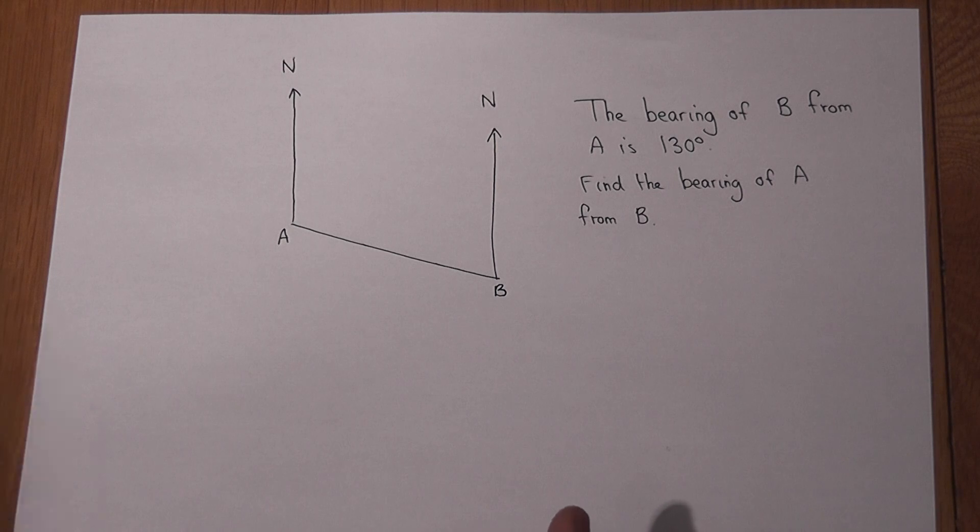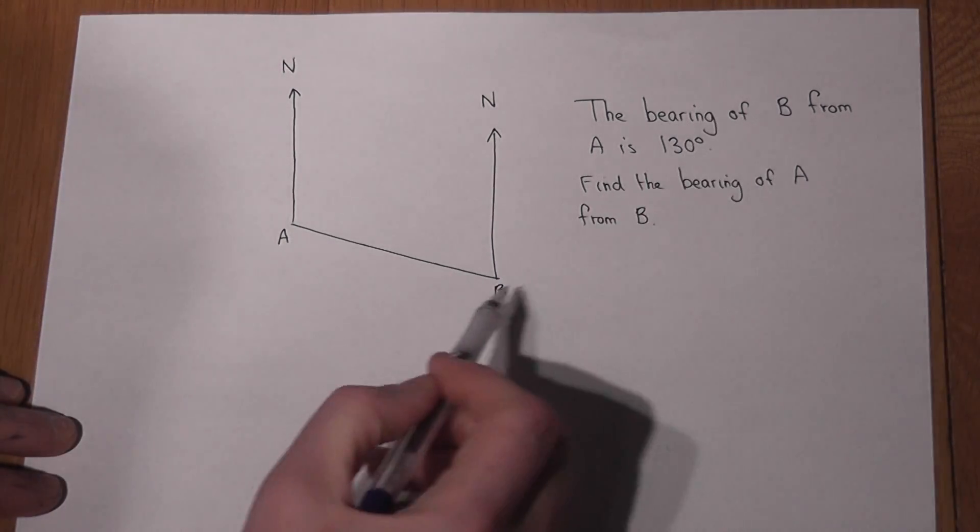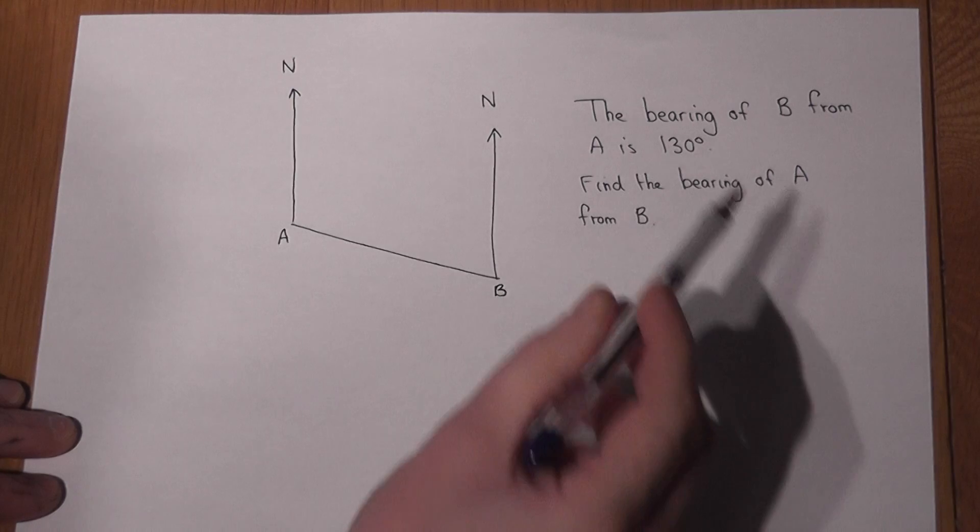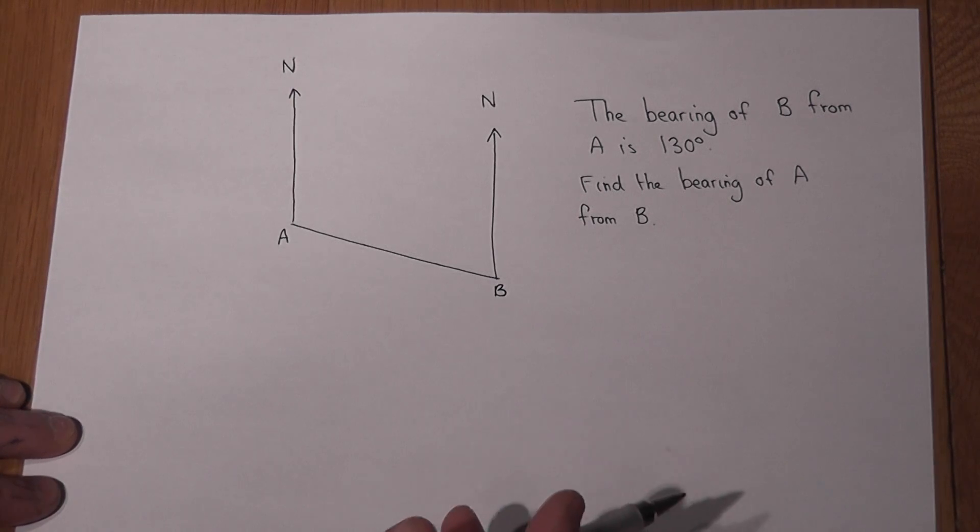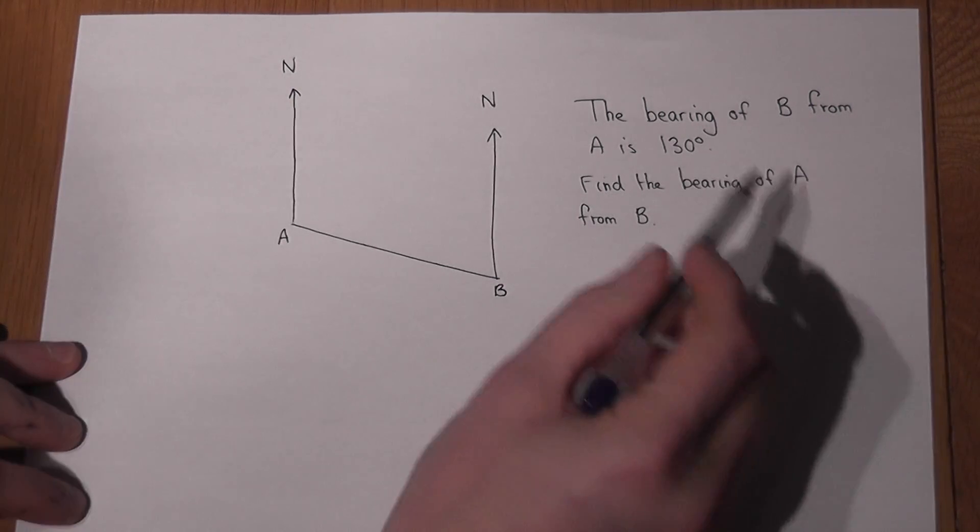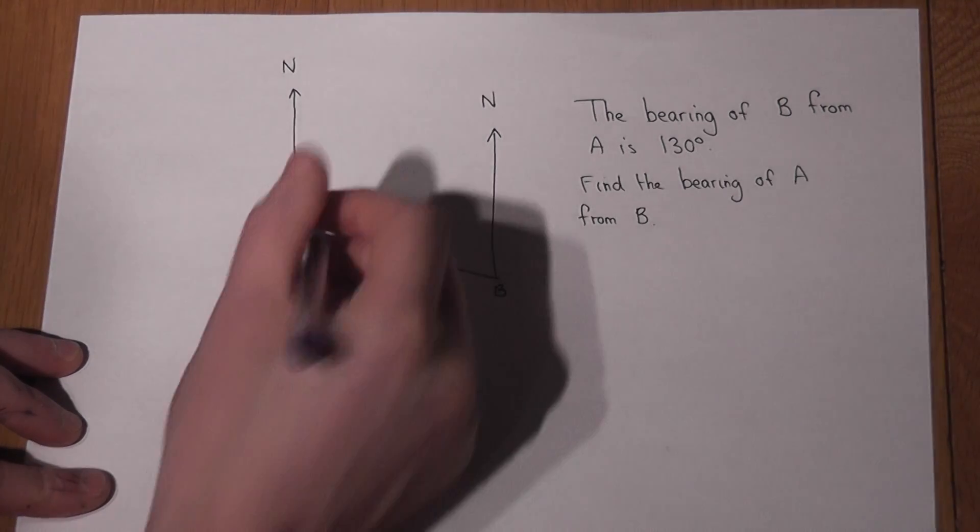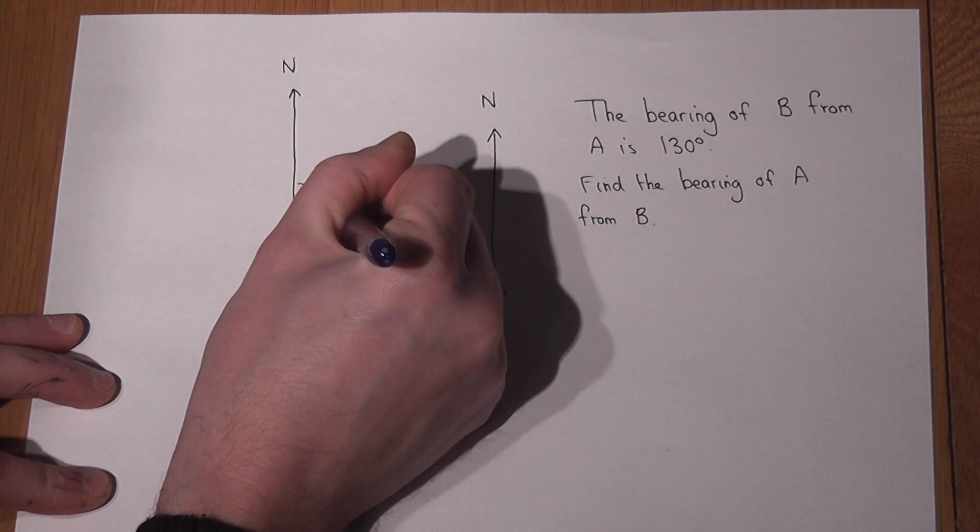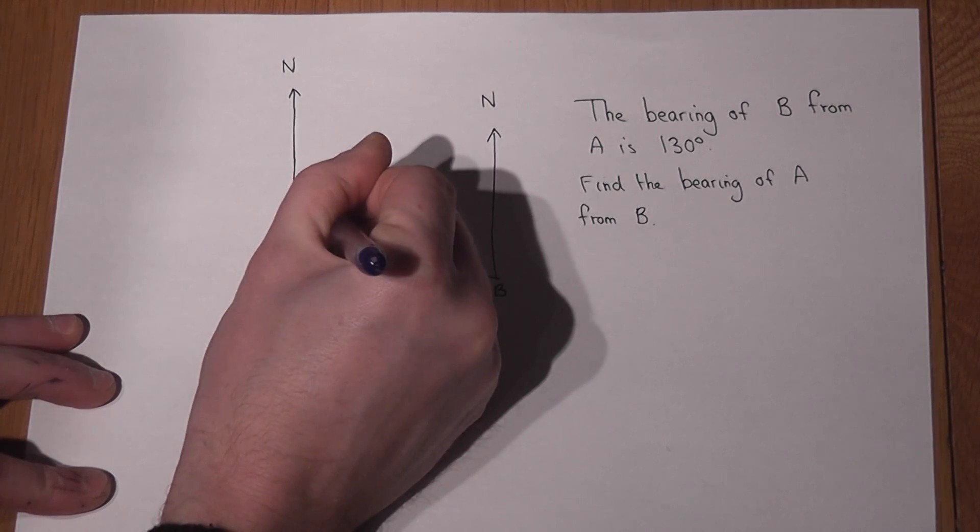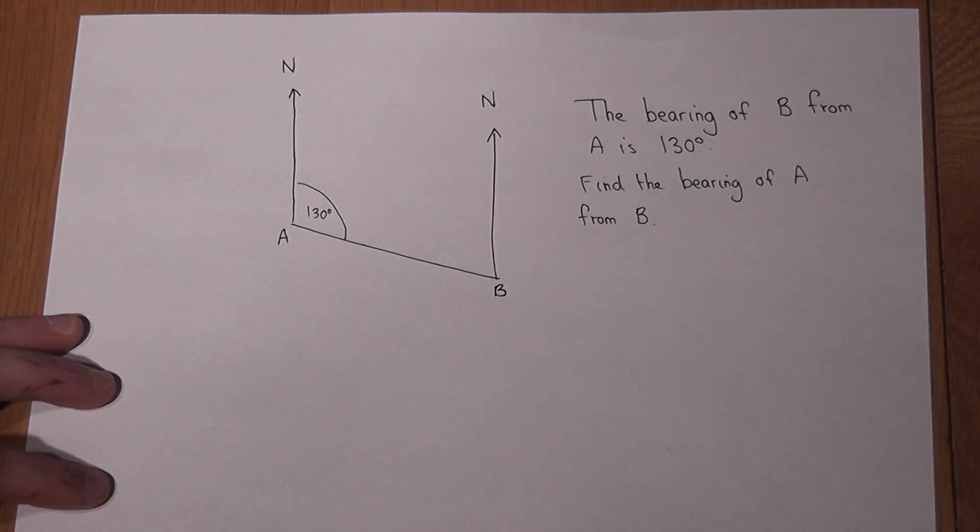Now we're told that the bearing of B from A is 130 degrees and in simplistic terms a bearing is just the angle clockwise from north so B from A is 130 degrees and we're asked to